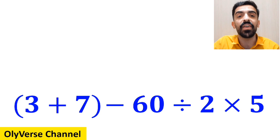What is the value of the expression 3 plus 7 in parenthesis, then minus 60 divided by 2 multiplied by 5? Which option do you think is the correct answer to this question? At first glance, this expression seems very simple, but unfortunately, many people get tricked.